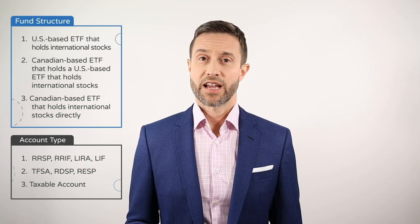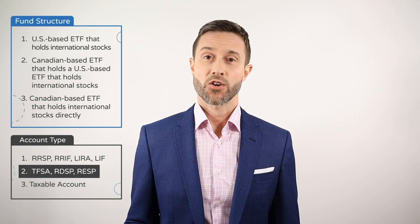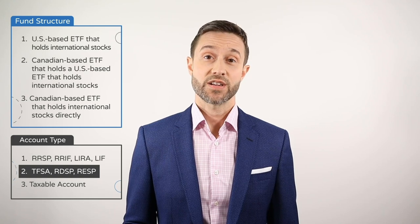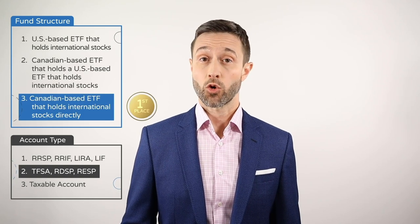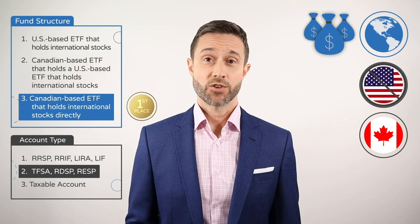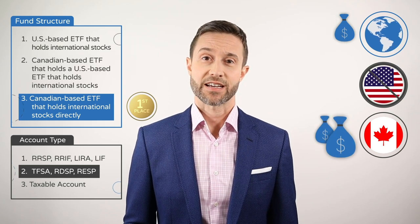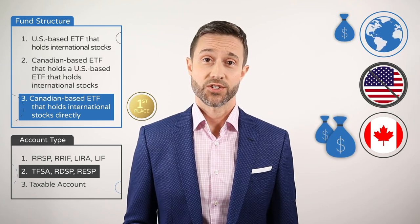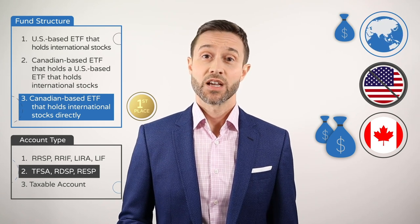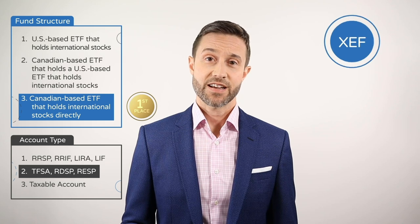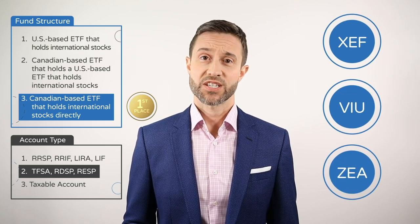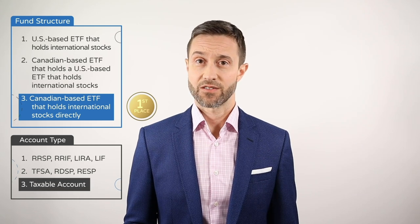When holding international equity ETFs in a TFSA, RDSP, or RESP account, the preferred fund structure is a Canadian-based ETF that holds international stocks directly. This structure results in only one layer of withholding tax, while the others have two layers. So if you're holding international equity ETFs in your TFSA, I'd suggest opting for XEF, VIU, or ZEA. I also prefer the same ETF structure for taxable accounts.